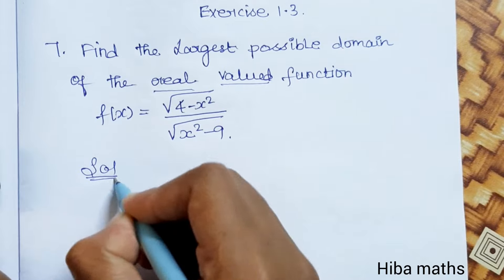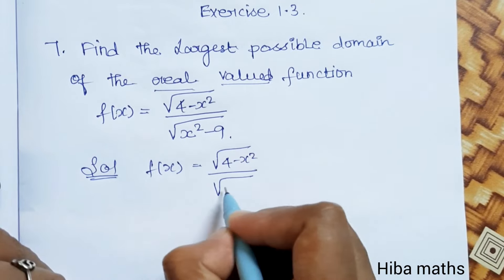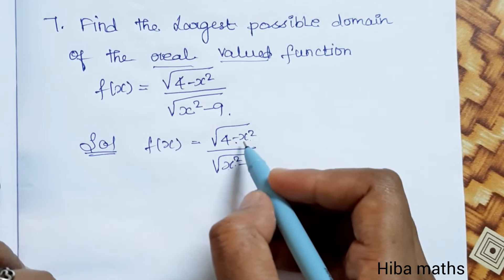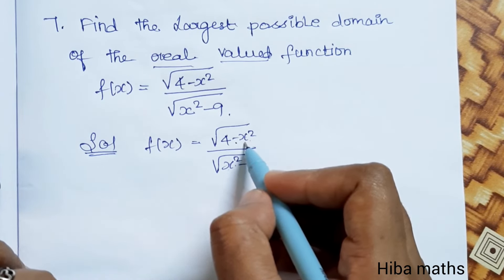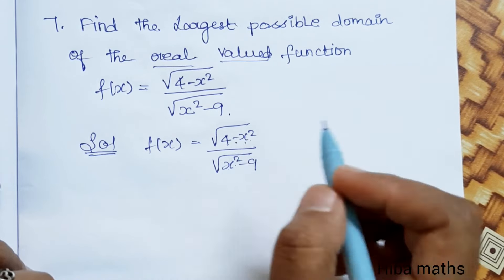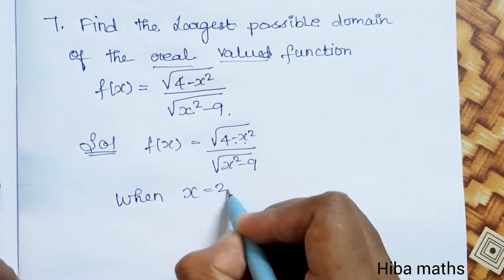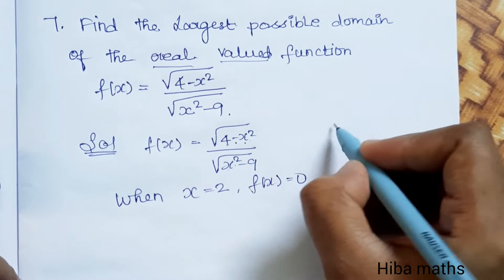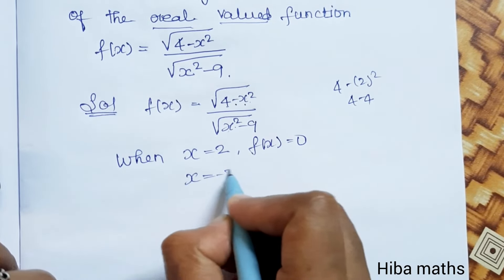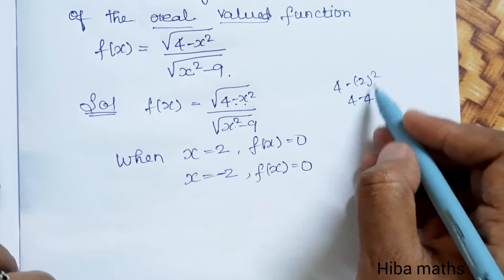For the numerator, we need 4 - x² ≥ 0. For example, if x = 0, then 4 - 0 = 4, which is valid. If x = ±2, then 4 - 2² = 0, so f(x) = 0. Testing x = -2: f(x) gives 0 since 4 - (-2)² = 0.